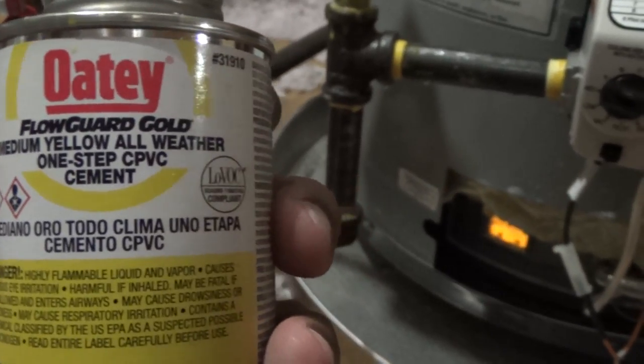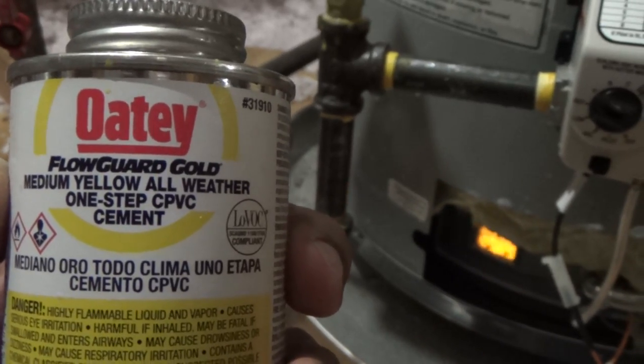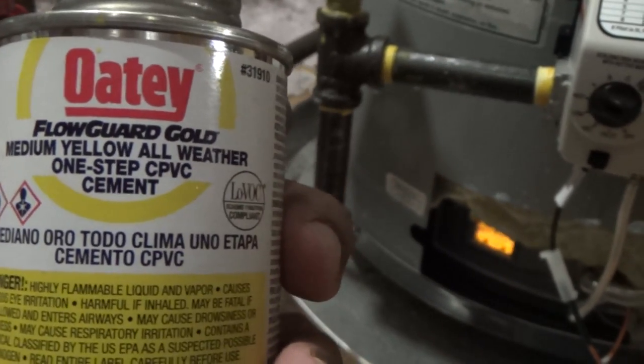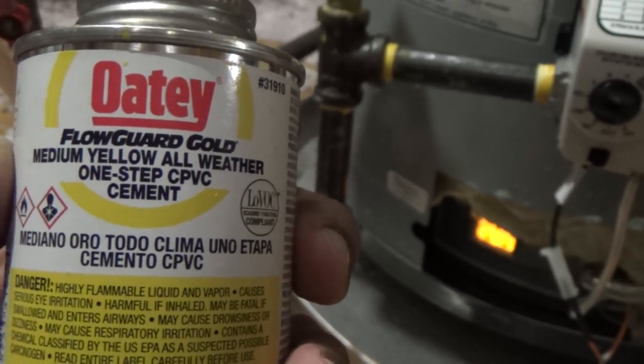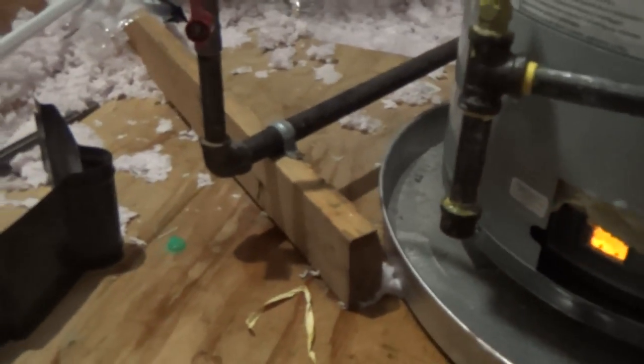Well this is made by Oatey and it's a Flow Guard Gold Medium Yellow CPVC cement. You can find this, it's like four dollars.